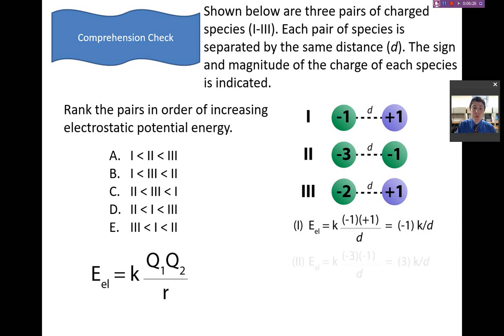For set number 2, we have a charge of negative 1 and a charge of negative 3. When we multiply that times K and D, we get positive 3 times K over D. For the third set, we have a negative 2 charge and a positive 1 charge. Multiplying those gets us a negative 2 times K over D.